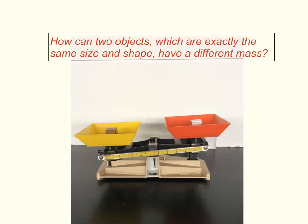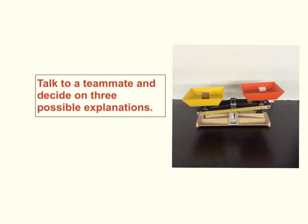How can two objects which are exactly the same size and shape have a different mass? Talk to a teammate and decide on three possible explanations.